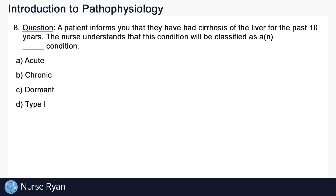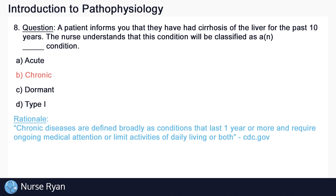And for the last question of this quiz, number eight: a patient informs you that they have had cirrhosis of the liver for the past 10 years. The nurse understands that this condition will be classified as a blank condition. The answer is B, chronic. Chronic diseases are defined broadly as conditions that last one year or more and require ongoing medical attention or limit activities of daily living, or both.